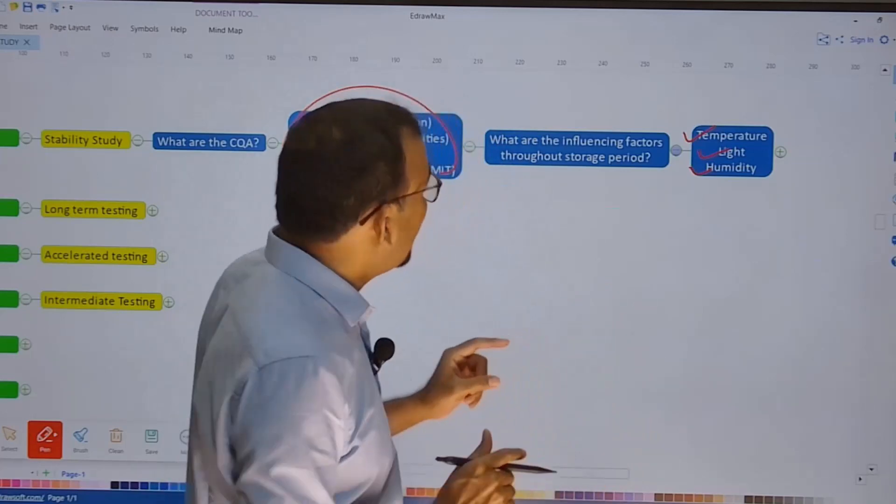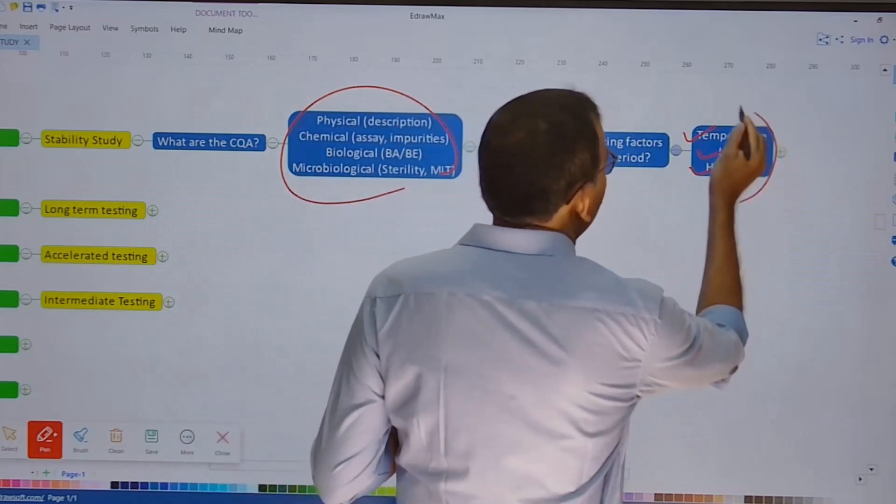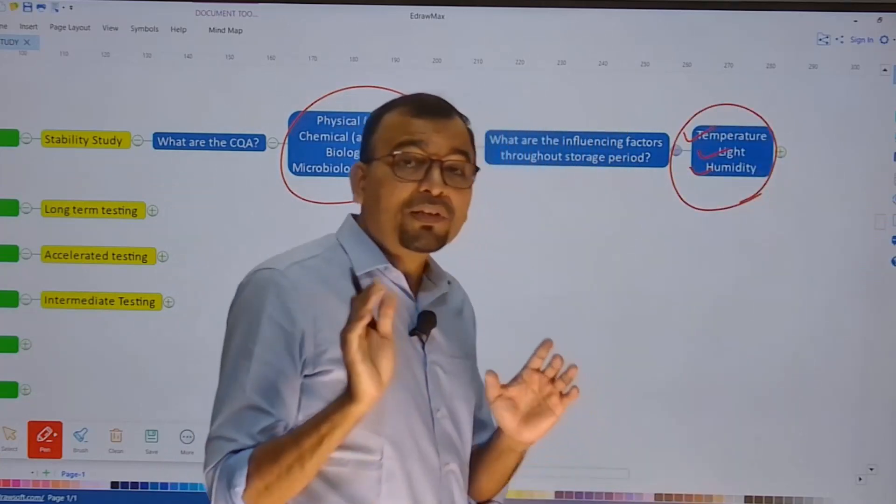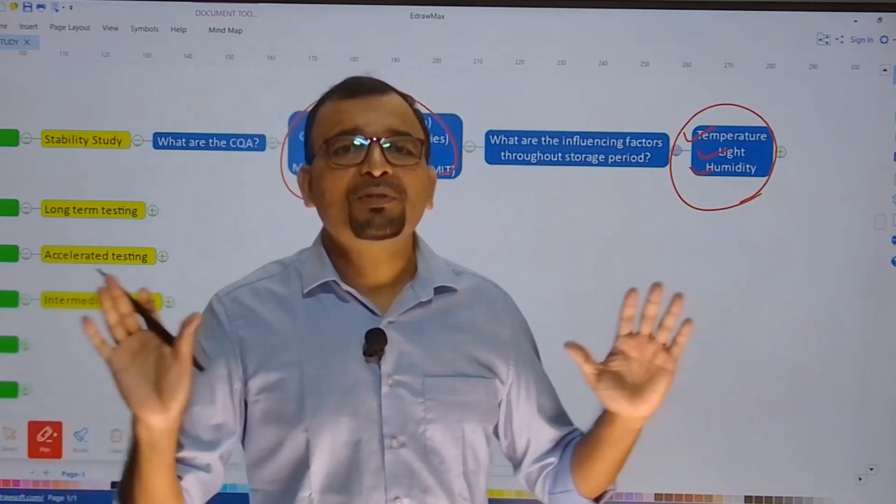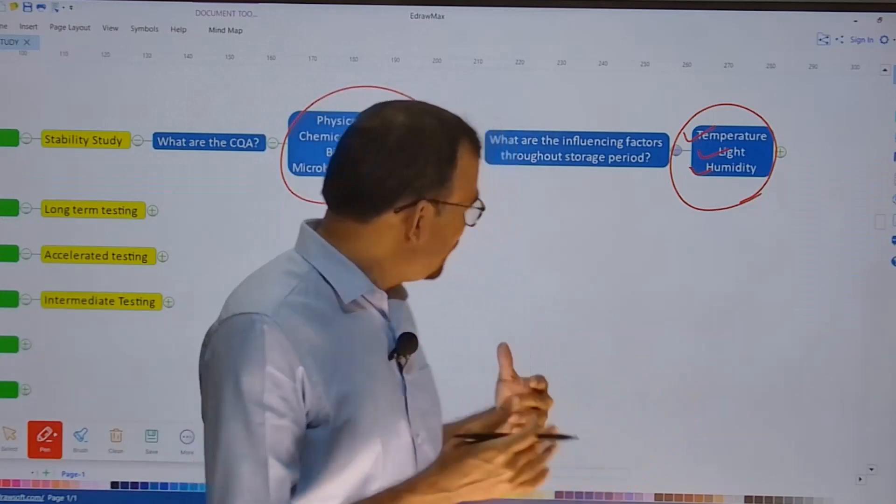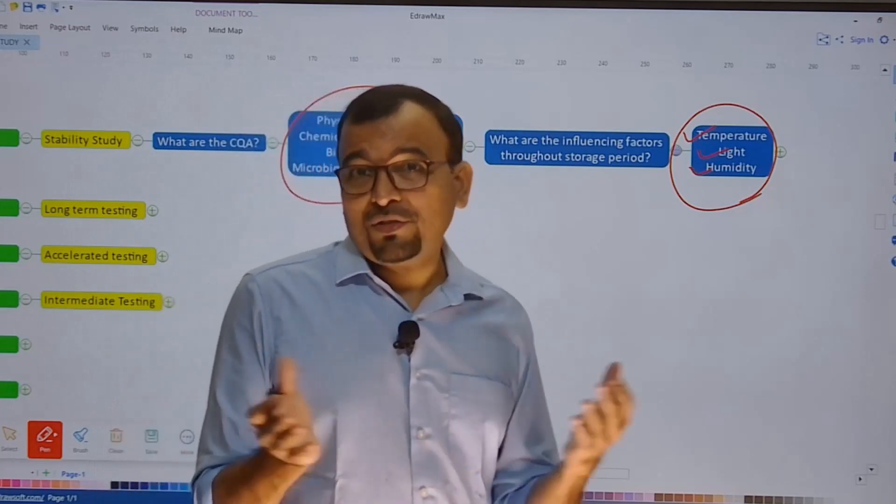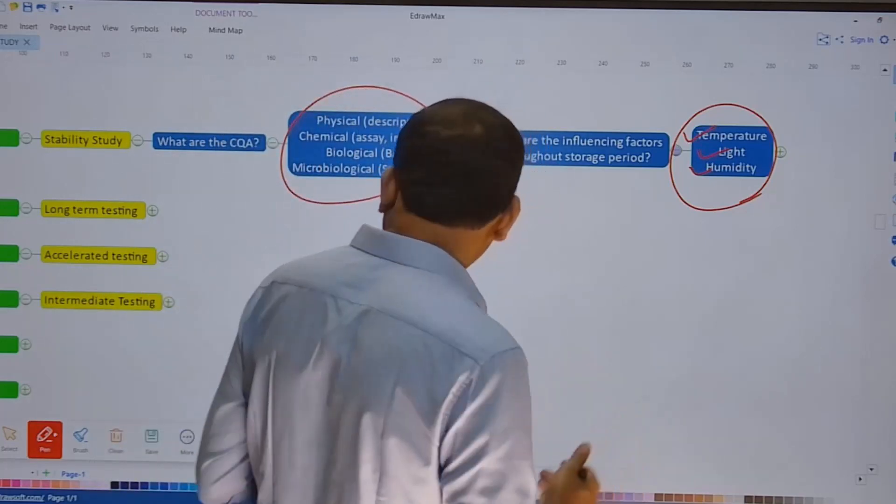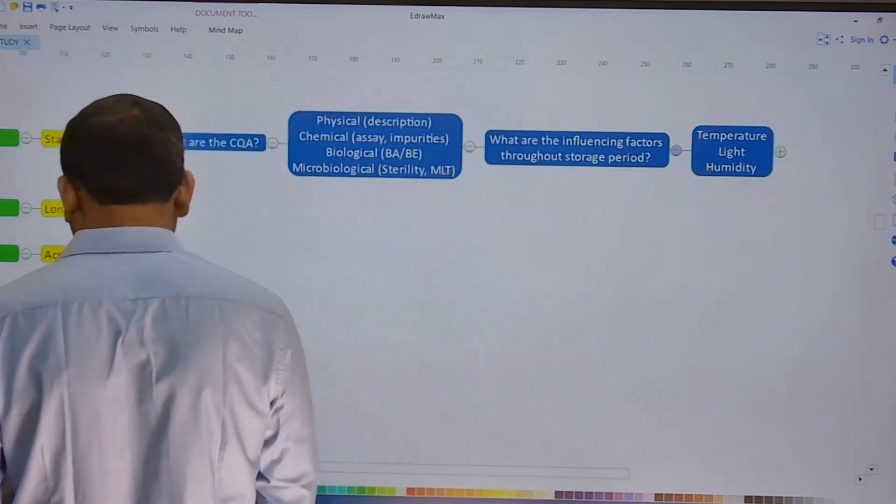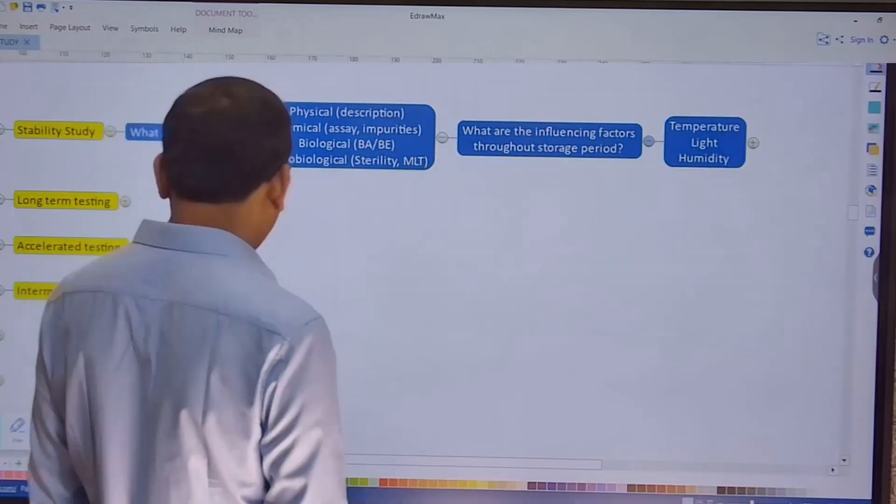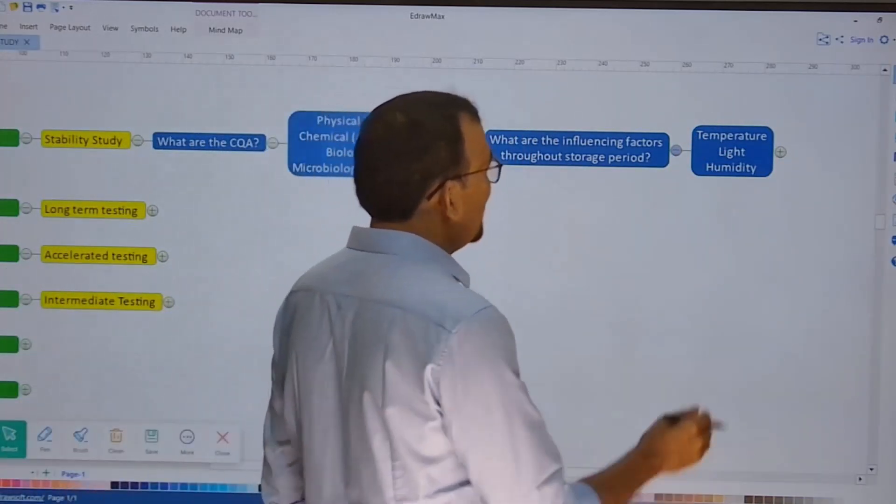So these are the three important factors which can certainly influence our CQA of the product. And hence it is very important to realize that these three factors shall be considered over the period of stability study. We'll talk about the temperature, light, and humidity conditions when you talk about the different stability conditions, maybe long-term, accelerated, or intermediate.